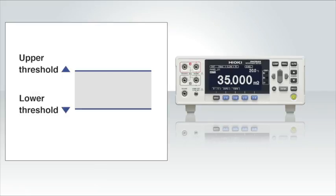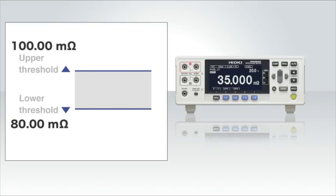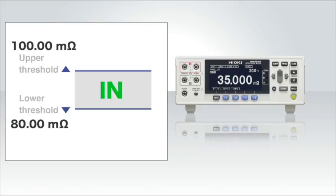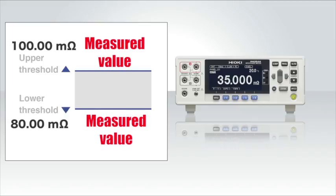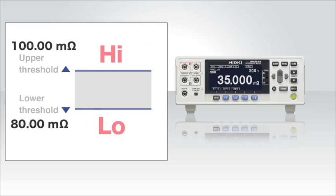The comparator function on the RM3544 lets you set upper and lower resistance thresholds and automatically compares the measured resistance with those thresholds. If the measured value is within the thresholds, the decision will be IN. If the measured value exceeds the thresholds, the decision will be either HIGH or LOW.